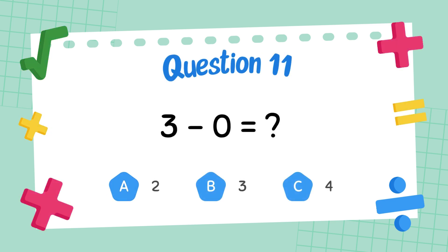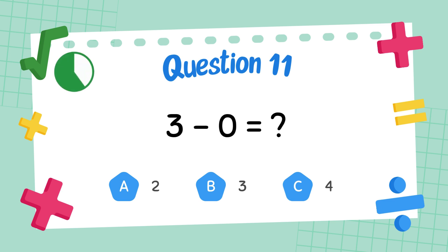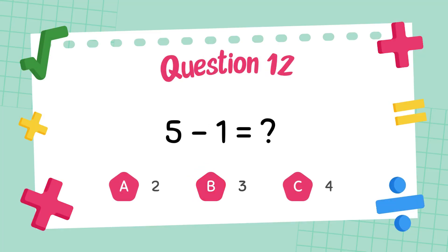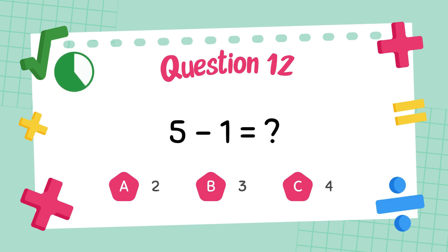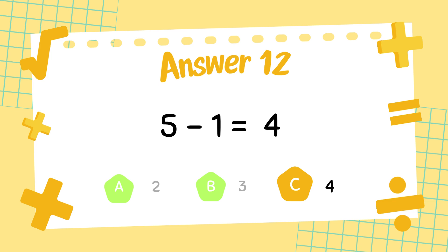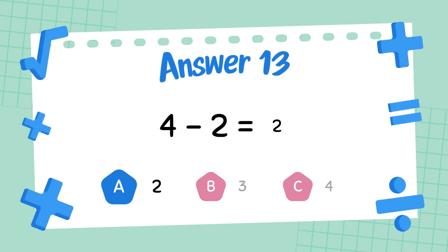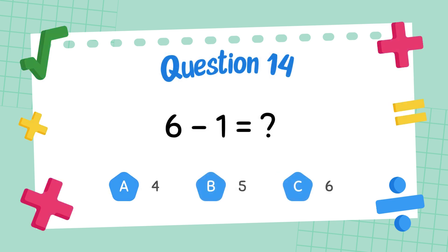What is 3 minus 0? The answer is 3. What is 5 minus 1? The answer is 4. What is 4 minus 2? The answer is 2.